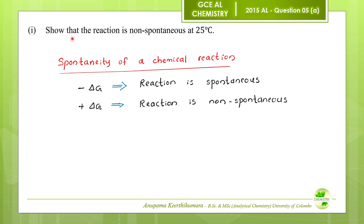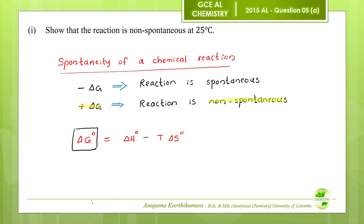We have to show the given reaction is non-spontaneous at 25°C. Therefore, we need to prove that the ΔG value of this reaction is positive. The Gibbs free energy change equation is: standard ΔG° equals standard ΔH° minus temperature times standard ΔS°.